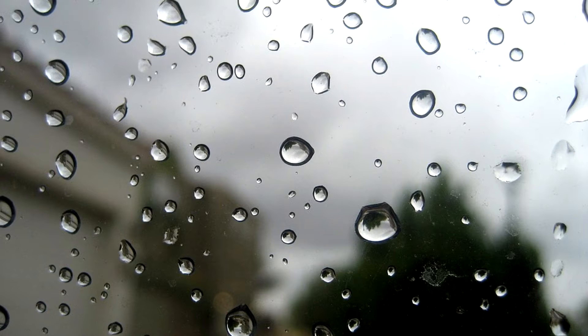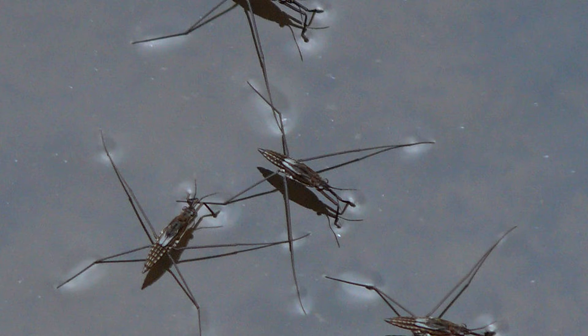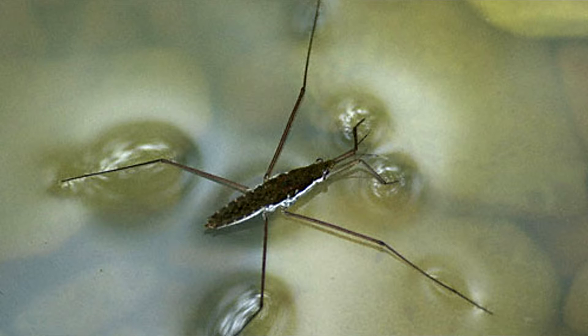This is the reason behind why you see sometimes water droplets form on glass instead of washing off, and also what allows some small insects or animals to practically walk on water.